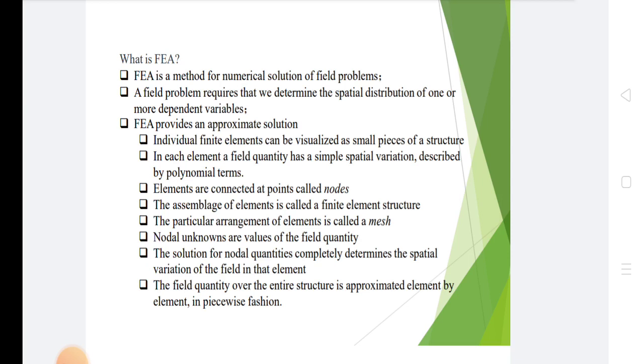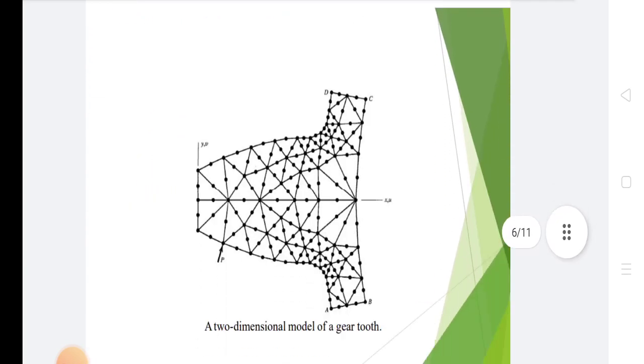Nodal unknowns are values of the field quantity. The solution for nodal quantities completely determines the spatial variation of the field in the element. The field quantity over the entire structure is approximated element by element in a piecewise fashion. This is a two-dimensional model of gear tooth.